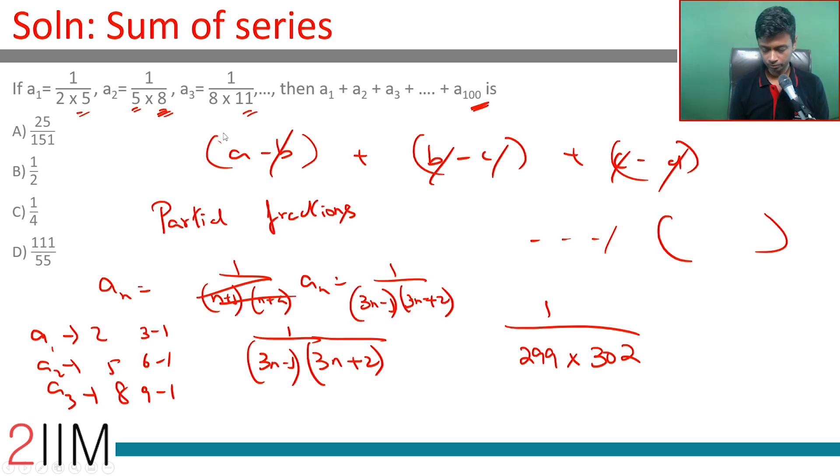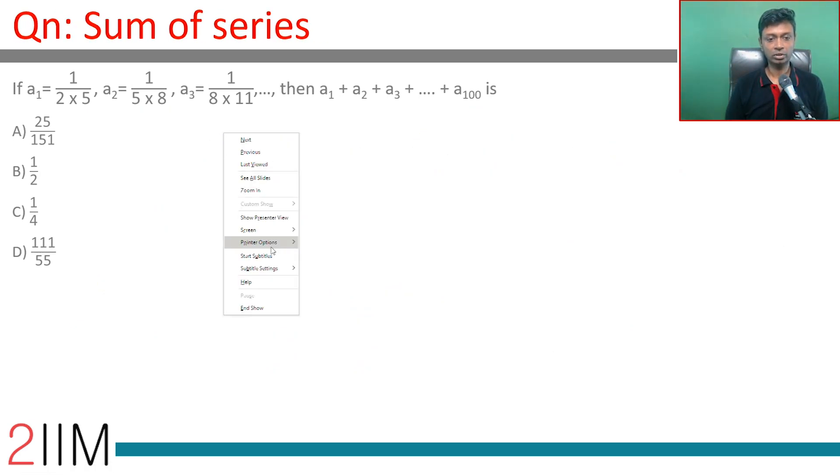Start with, I am going to go back to this. 1 by 2 into 5, I am going to think about it as 1 by 2 minus 1 by 5. LCM is 2 into 5, numerator is 5 minus 2, so 3 by 2 into 5.